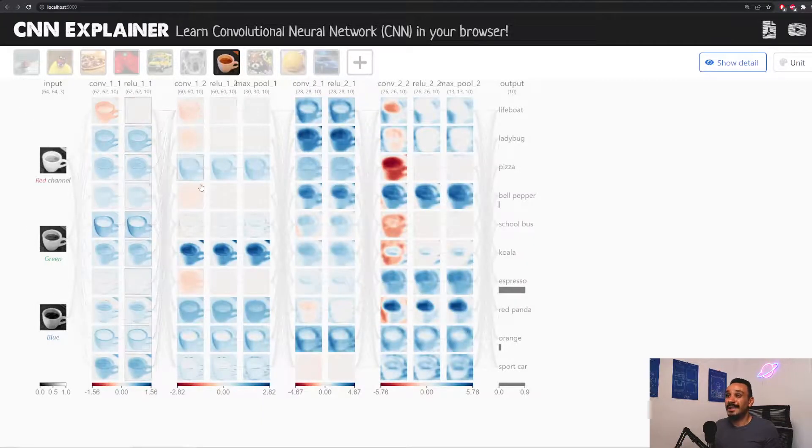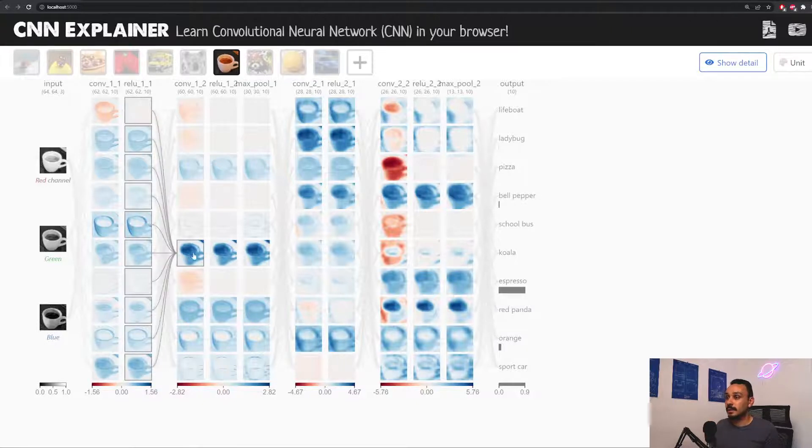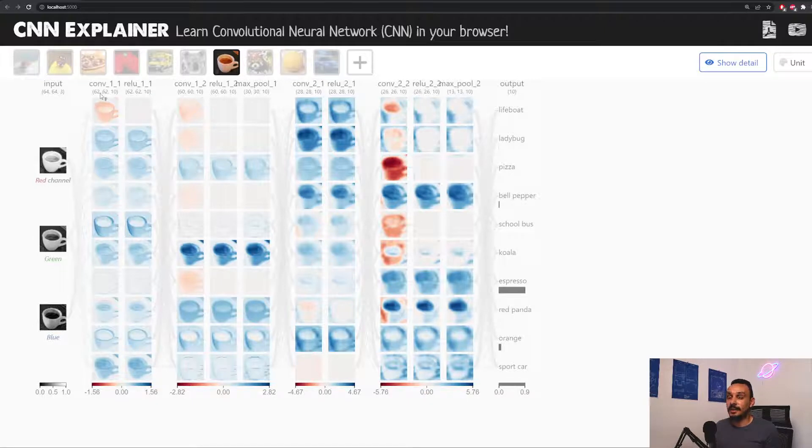You can see it over here that the photo is changing shape. Each filter is extracting either the edges or focusing on the inside or focusing on the shades in the photo, which is what you see, for example, over here in this filter.